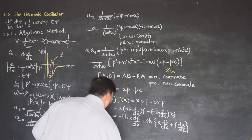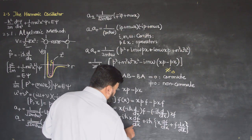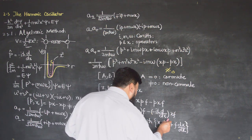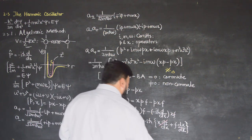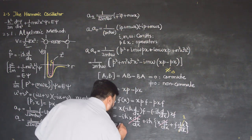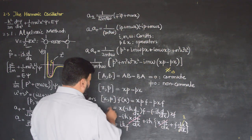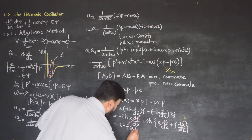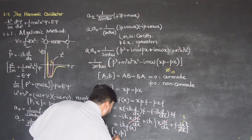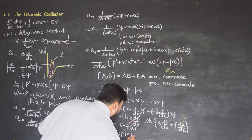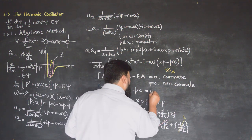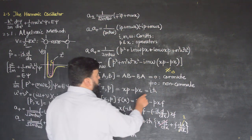So we have −iℏ·x·df/dx plus iℏ·x·df/dx — these two terms cancel. The remaining term gives iℏ·f. Comparing with the original test function f(x) and removing it, we get the commutation relation [x, p] = iℏ.